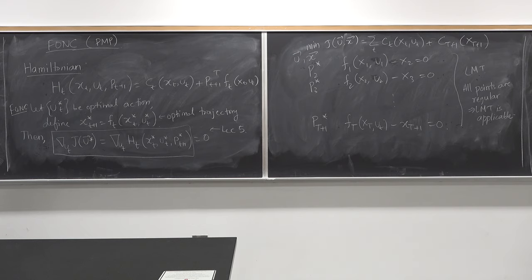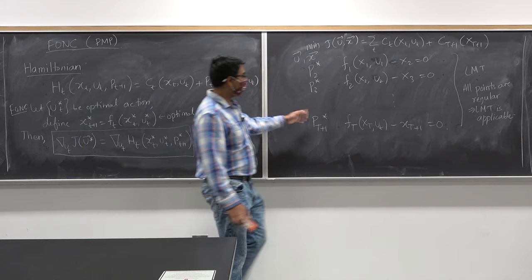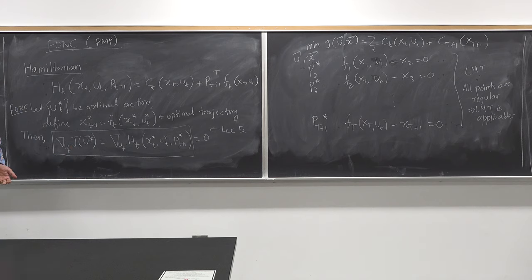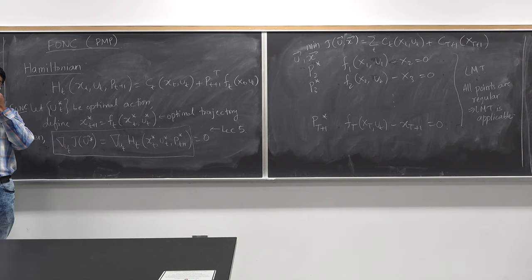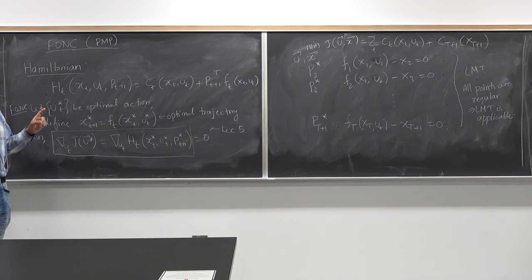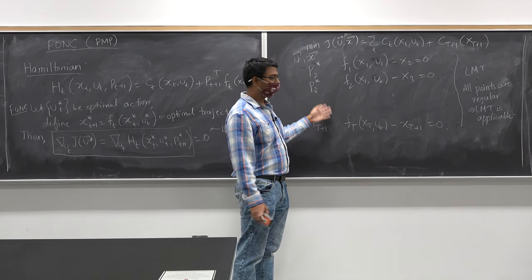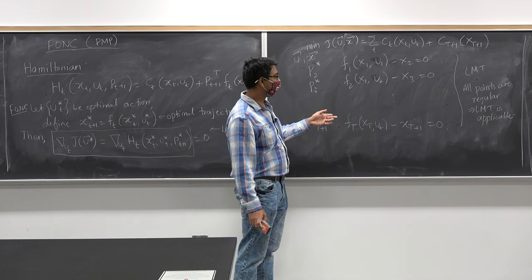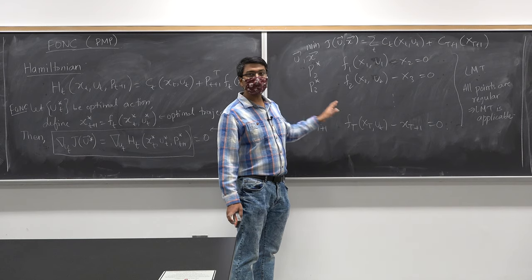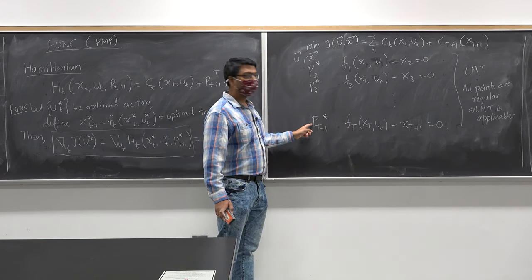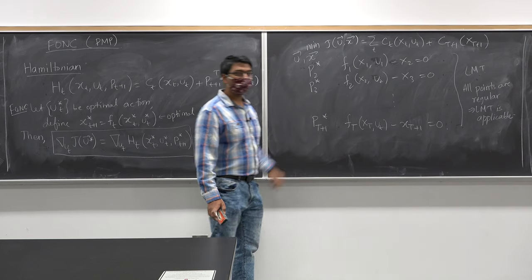Now that you know you can view this as a constrained optimization problem, you can use all the algorithms we have studied for solving constrained optimization problems. Backpropagation is just one way to solve this dynamic optimization problem. You can apply the method of multipliers, sequential quadratic programming — but not barrier method, since that requires inequality constraints. All sorts of methods we have studied are now open to you.